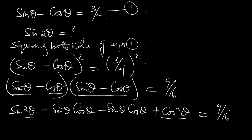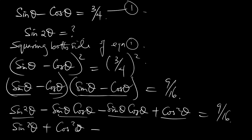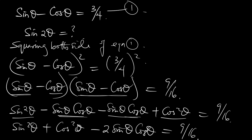Now we bring this together. We have sine squared theta plus cos squared theta. The two sine theta cos theta terms are the same, so we add them together to get minus 2 sine theta cos theta, equal to 9 over 16.